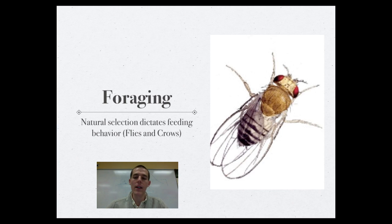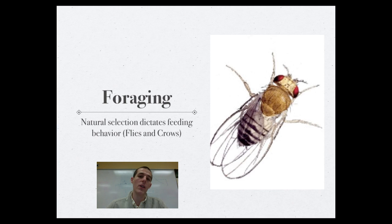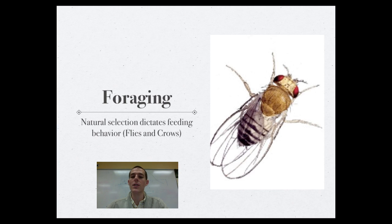The frequency of each allele in the population is related to population density. In a high-density population with a lot of flies living together, the rover allele shows up more frequently because it's beneficial for flies to travel away from their neighbors to find food. In a low-density situation, the sitter allele is better because you don't want to spend energy flying to get food if you've got plenty where you live. Scientists have shown that if they increase or decrease the density of a fruit fly population, the frequency of this allele will go up and down appropriately.